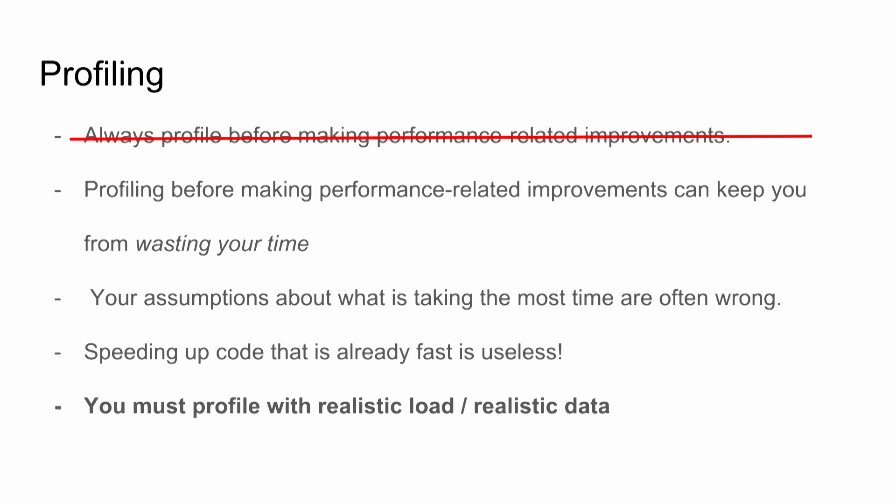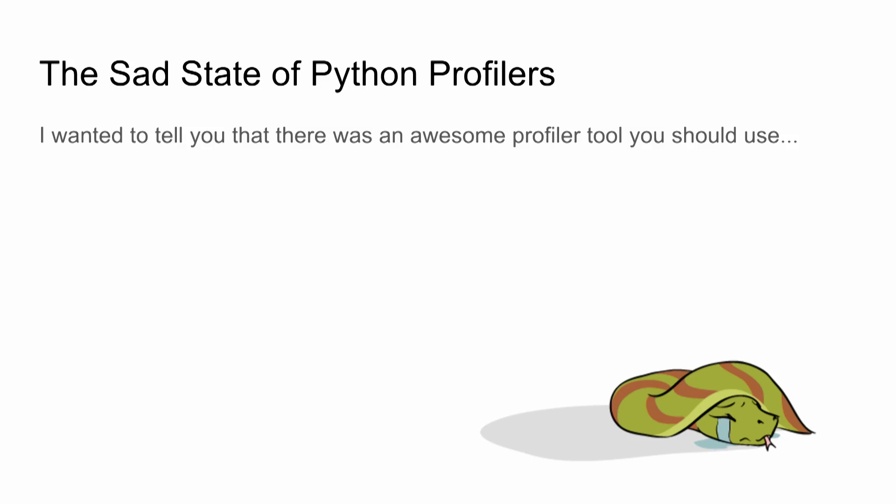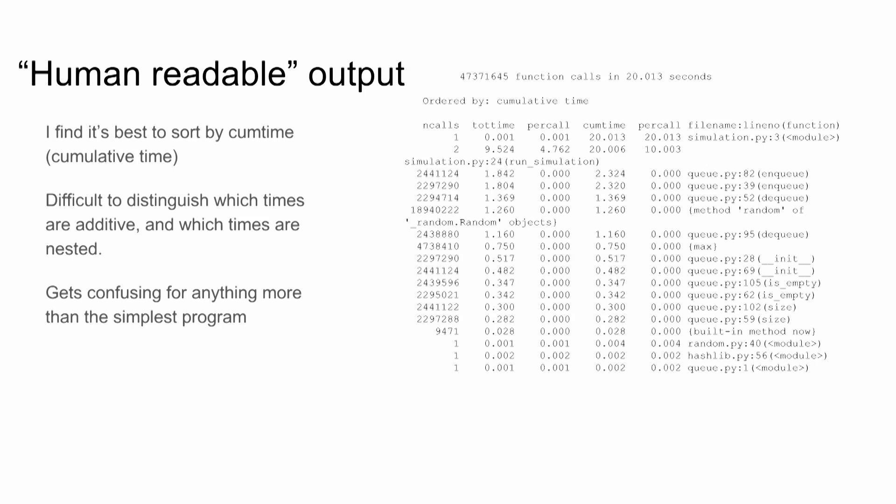I wanted to tell you there was a super awesome profiler tool, but unfortunately Python's a little bit sad here. There are some profiling tools, but a lot of them are sort of pet projects and aren't really production-ready. A lot of them take some fudging — you might have to write custom code to introduce the profiler and tell it when and where. The profiler I've decided I should tell you to use is cProfile — it's built into the standard library. It's got two formats: binary and human-readable.